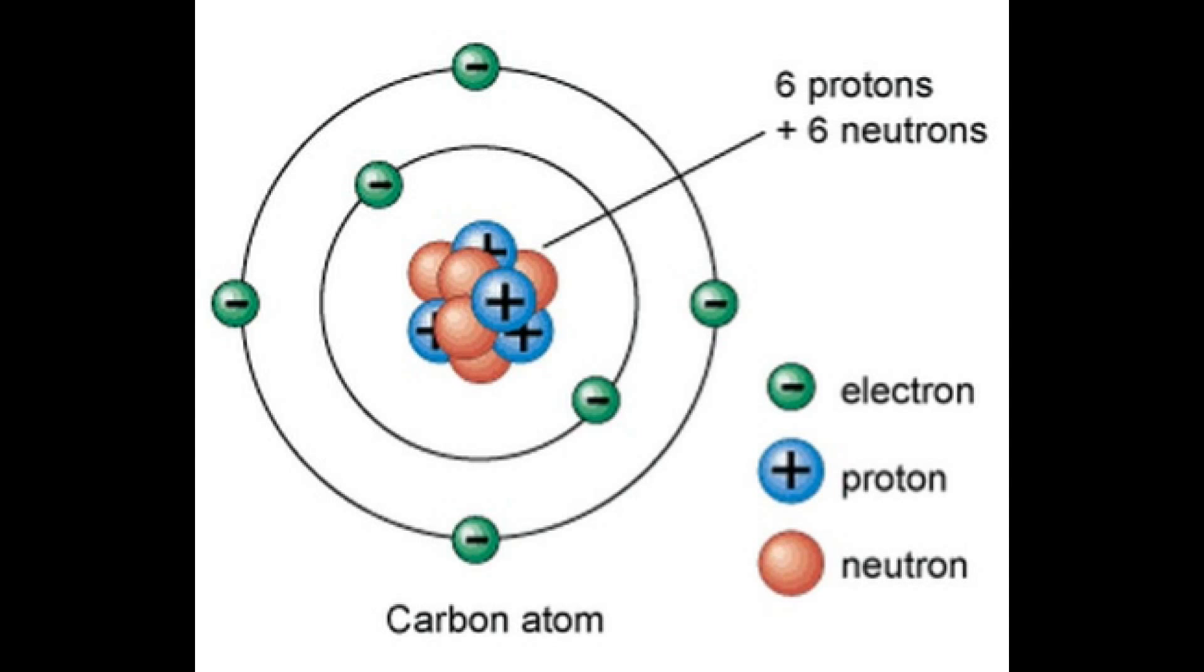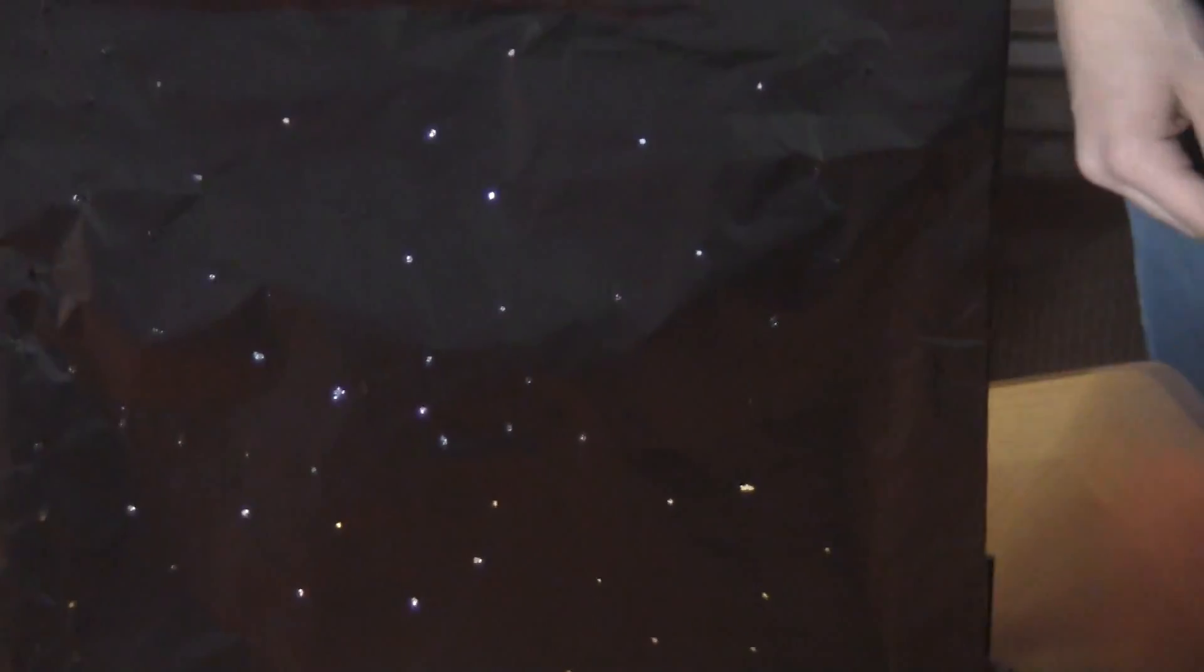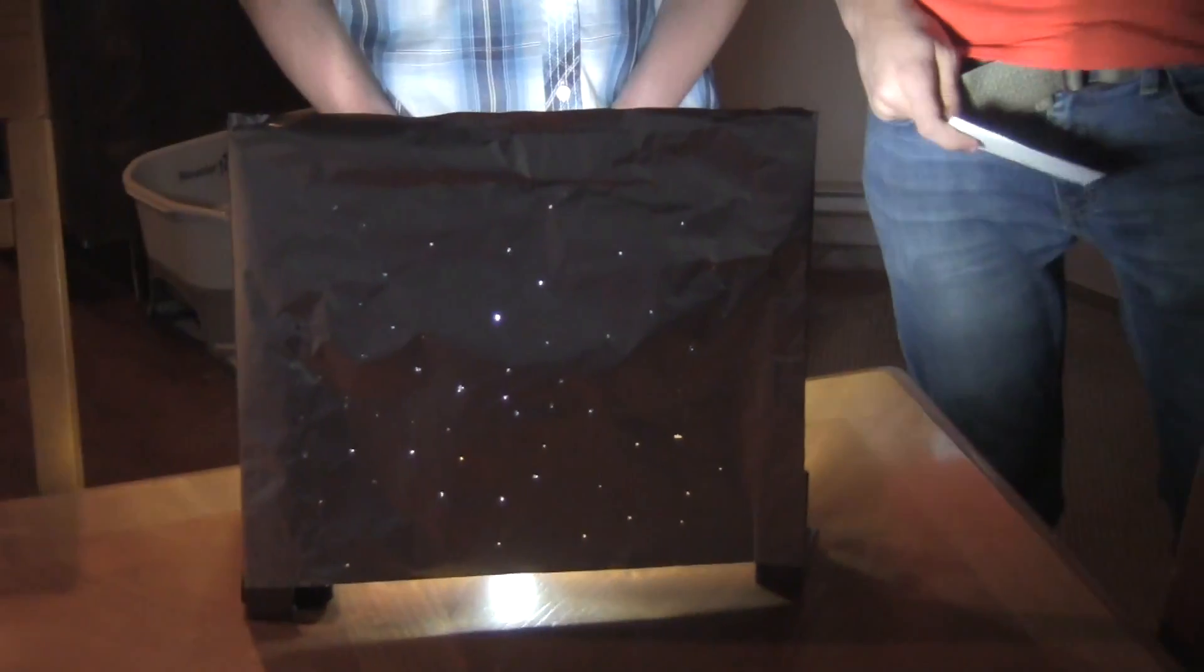He created the planetary model. So, Ernest Rutherford and his colleagues, Hans Geiger and Ernest Marsden, used the gold foil experiment by shining light through the foil with holes in it to find the atomic nucleus, and also that it has positive charges.